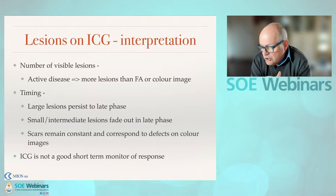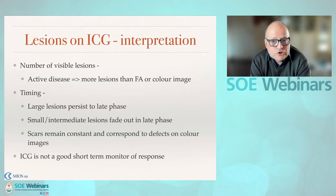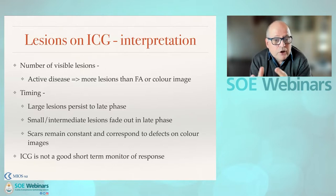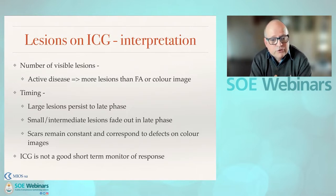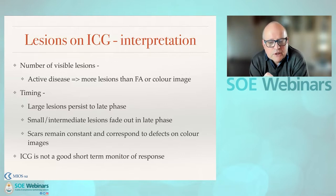We talk a lot about OCTA as being a useful approach, but really the best one for the choroid is enhanced depth imaging, and ICG is crucial. It allows you to identify a number of active lesions as areas forming granulomas that are hypocyanescent. The larger ones tend to persist into the late phase, but smaller ones tend to fade out as you go through the ICG phase. You should look at images out to about 30 minutes. Scars tend to remain constant in their appearance.